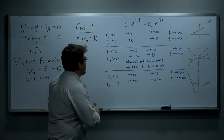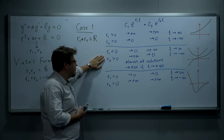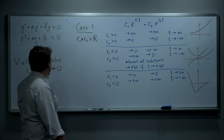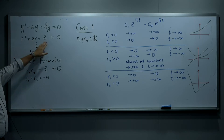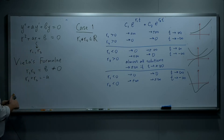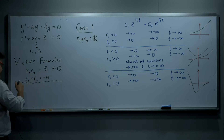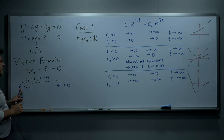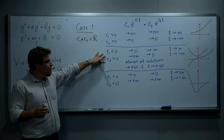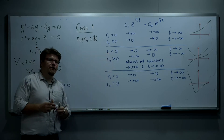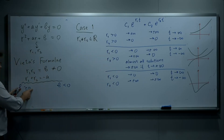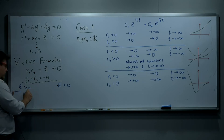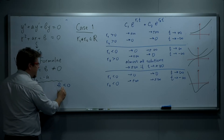The information about the signs of the two roots can be extracted from the signs of a and b. If b is positive, the second case of mixed signs is excluded, because the product of a positive and a negative number would be negative. So if b is positive, we either have two positive roots or two negative roots. If b is negative, we must have one positive and one negative root, and we are in the mixed-signs case.